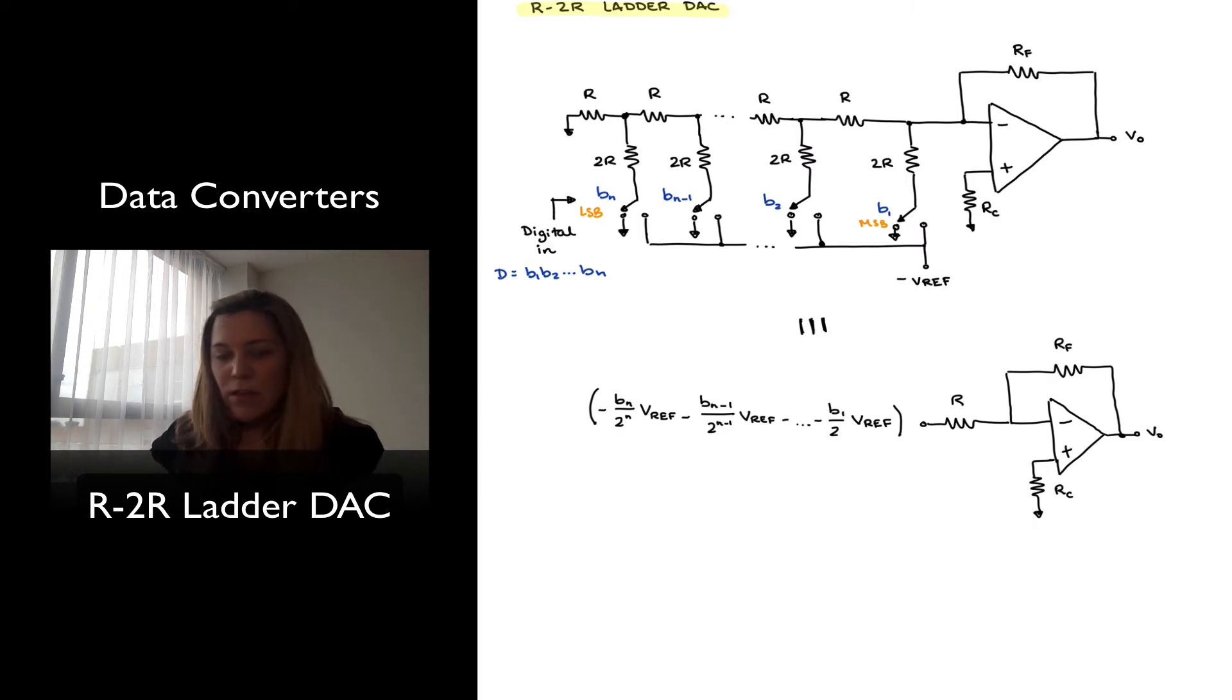Notice that if I draw the Thevenin equivalent, if I calculate the Thevenin equivalent for my R-2R ladder, what I end up with is an equivalent circuit that looks as follows. My linear combiner circuit with the feedback resistor RF, a series resistor R, and an input voltage which is essentially my VREF voltage which multiplies times the different bits and with each bit associated with a different weight, which is a power of 2.